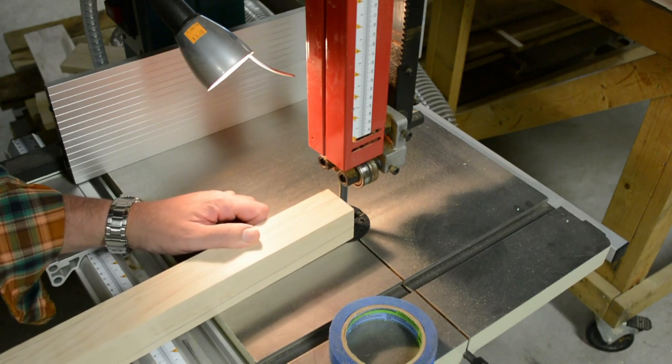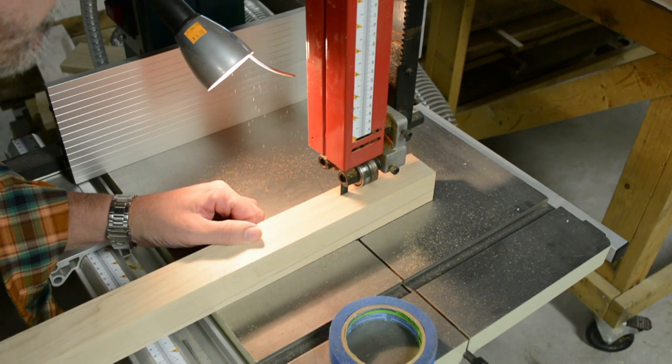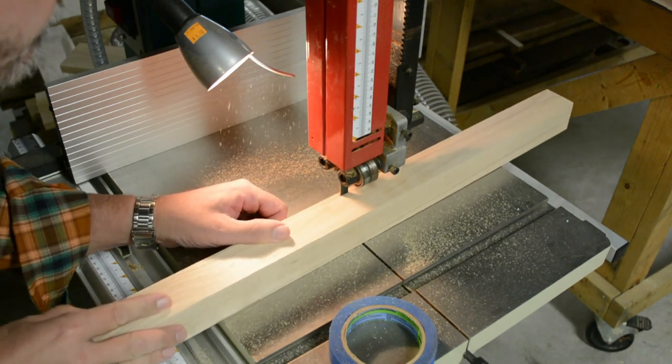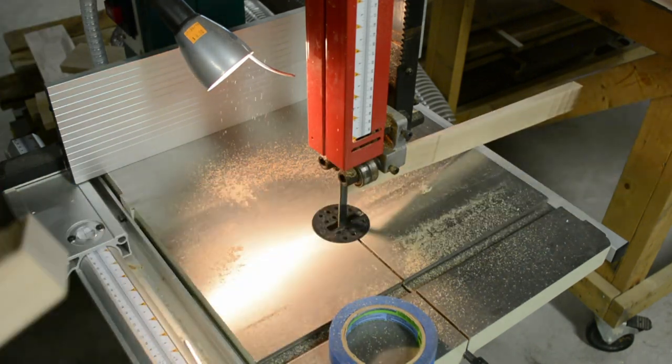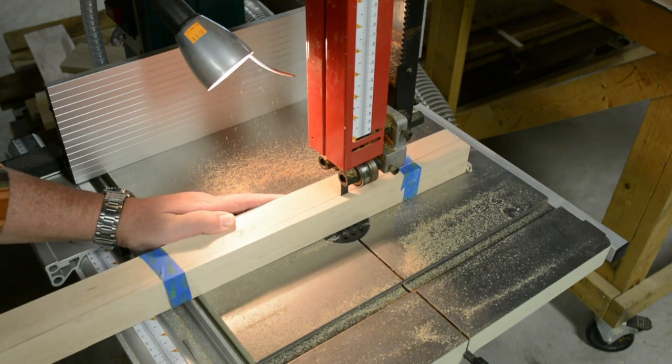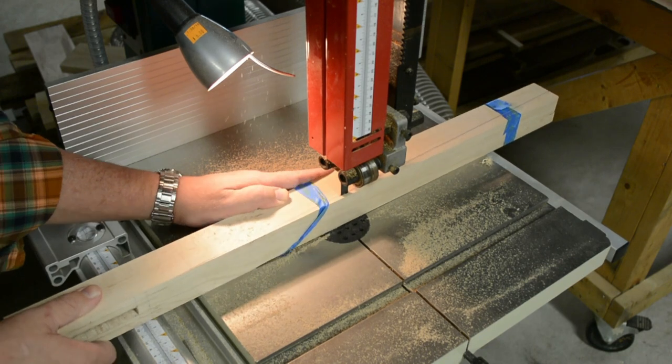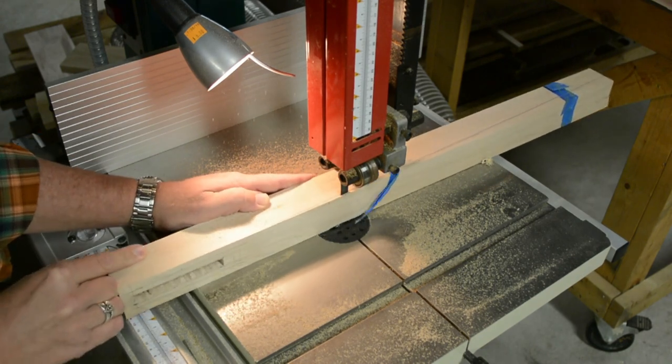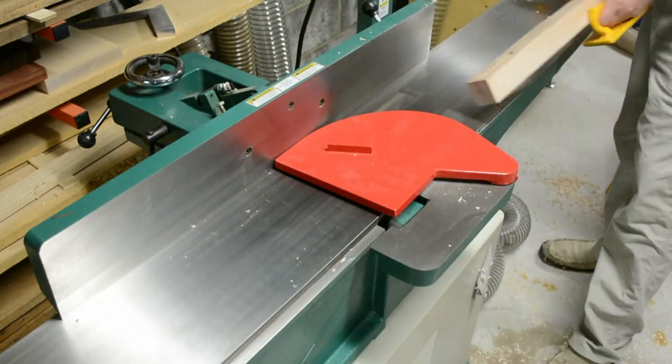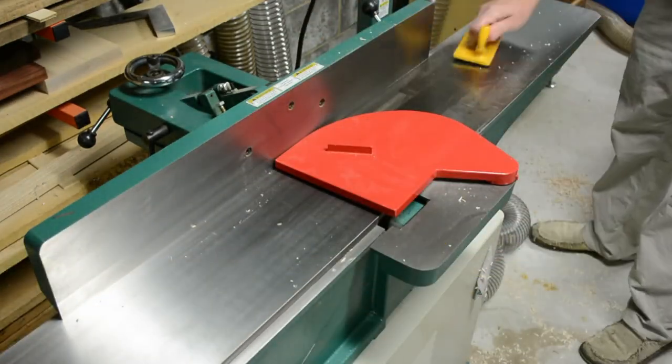I cut my tapers on a bandsaw, just run it through on the first line, tape the piece back on, run it through on the second line. It's fairly straightforward, no jig required. Once I get the piece cut out, I'll take it to the jointer and smooth the edges. I run the legs through on the downhill side of the taper, takes out the bandsaw marks, works really well, and it's a simple way to make tapers.